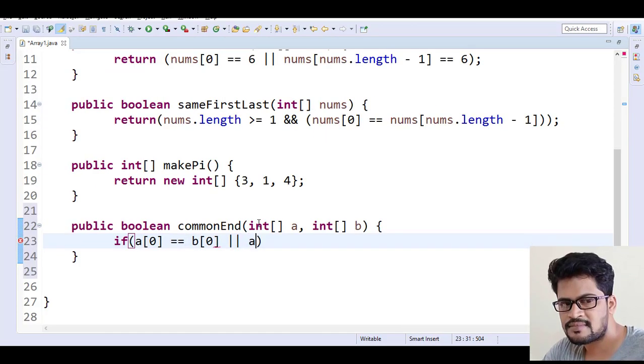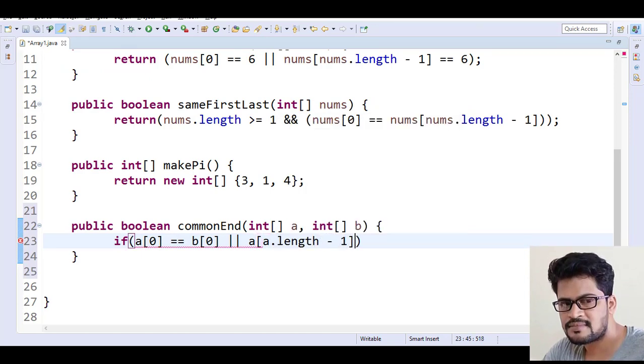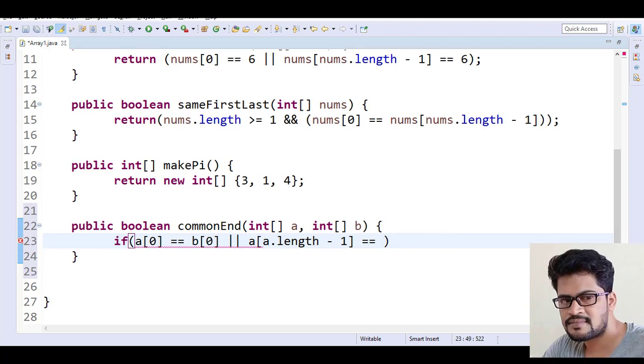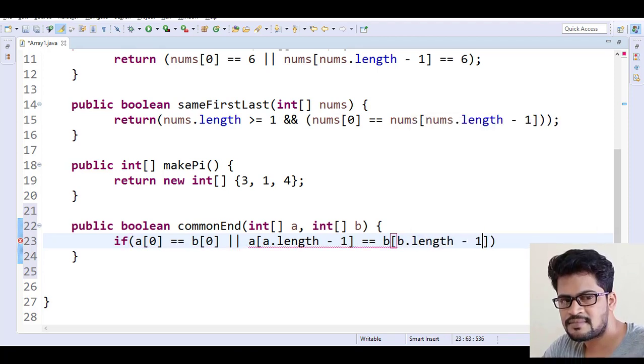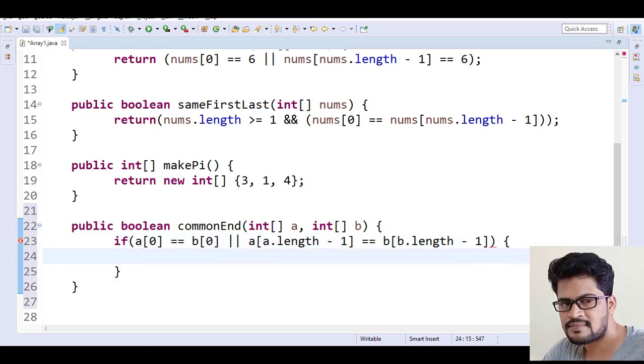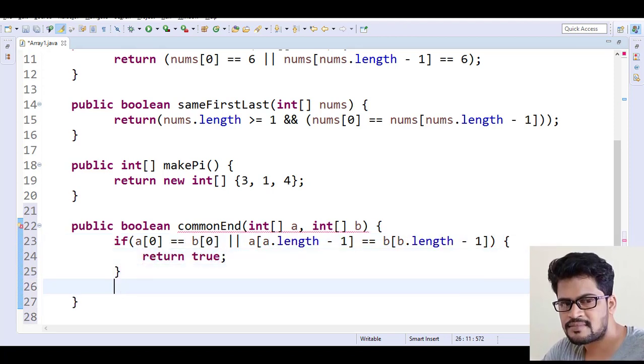Or, they've given a condition with OR - they have the same last element. How to get the last element? a[a.length - 1] is equal to b[b.length - 1]. That's the last element. So if this condition matches, return true, else return false.